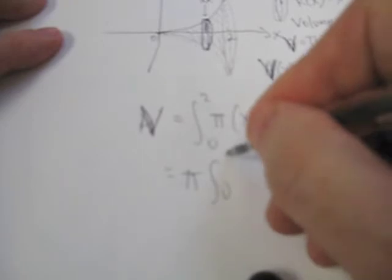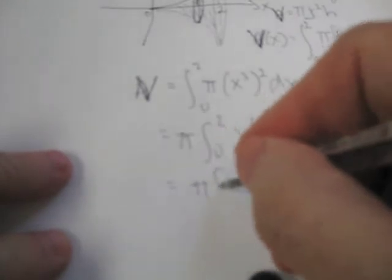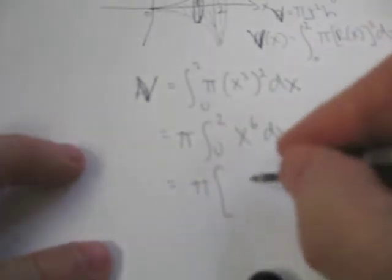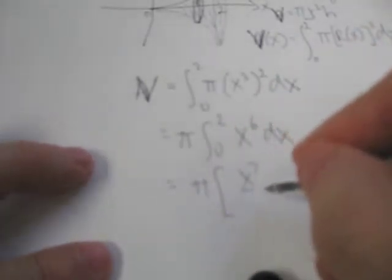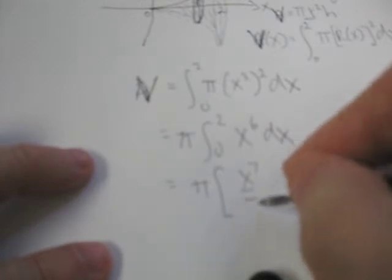So, we're looking to bring the pi out, so it's the integral from 0 to 2 of x to the 6 dx, which is simply going to be pi by x to the 7 on 7, and we're going to evaluate that between 0 and 2.